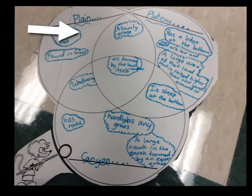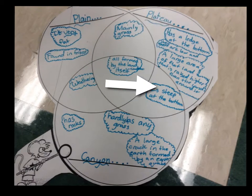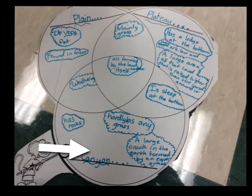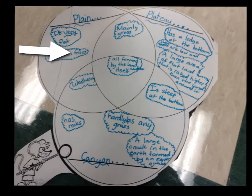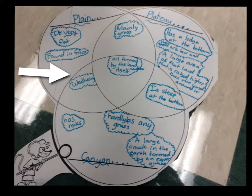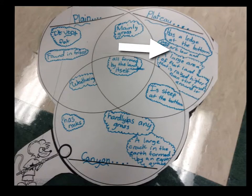This is about plains, plateaus, and canyons — the differences and things that are the same. A plain is very flat, and it is also the only one here, I think, that is found in Frisco.